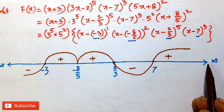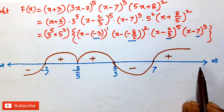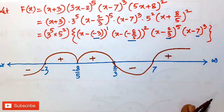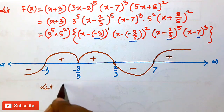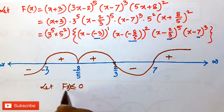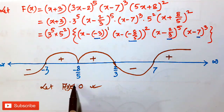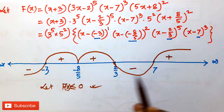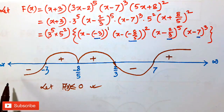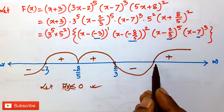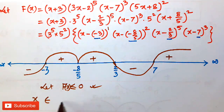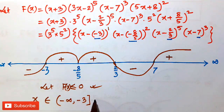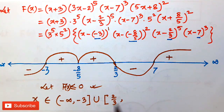This is the wavy curve method we have presented. Now, what is the actual use of this wavy curve method? Suppose f(x) ≤ 0 is given. Since f(x) ≤ 0, we take the negative parts of the wavy curve. We find there are two zones where negative parts reside: one is (−∞, −3) and another is (2/3, 7). So the solution is x ∈ (−∞, −3) ∪ (2/3, 7).